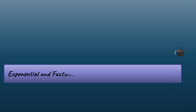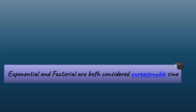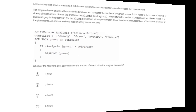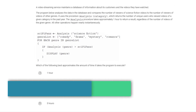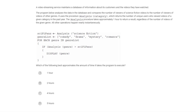Exponential and factorial algorithms are pretty common, and we consider these to be unreasonable in efficiency. Now let's start looking at some problems. Here's a fairly typical list iteration problem — a great one to start exploring algorithmic efficiency.